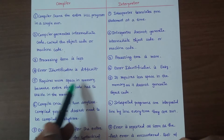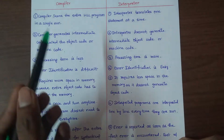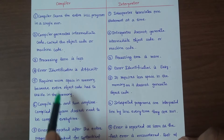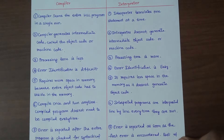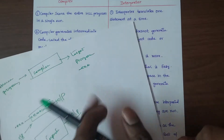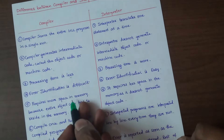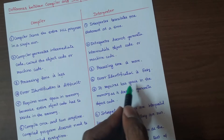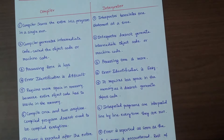Point 5: The compiler requires more space in memory, because it converts the source file to an executable .exe file which is stored. Whereas the interpreter does not require as much memory — it requires less space in memory.